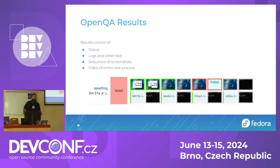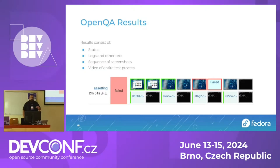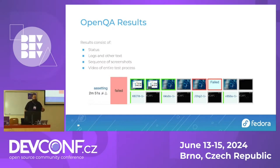That sequence is a representation of the test and what happened. Another thing that comes out is a video of the entire process. This is done in virtual machines, so there is a video of the graphical output from the virtual machine from the moment the test starts to the moment the virtual machine is turned off. But for the moment, the thing I'm really interested in is this sequence of screenshots.